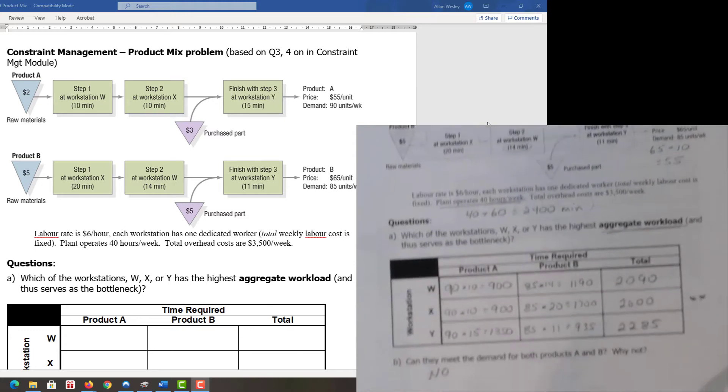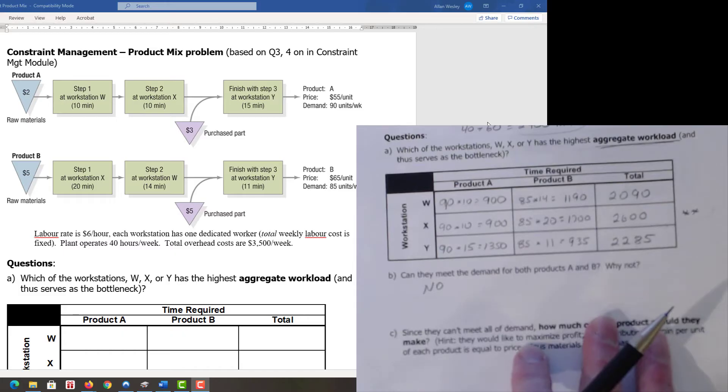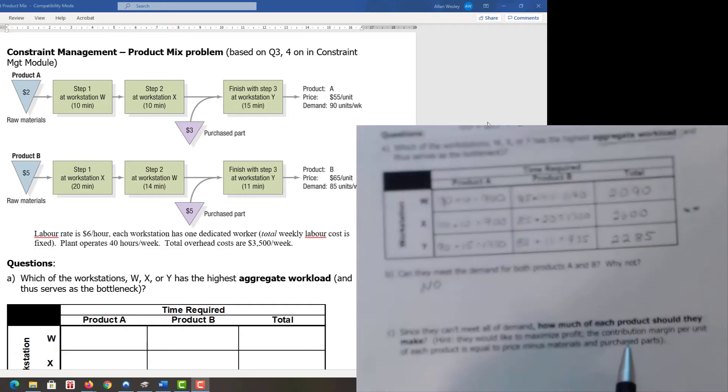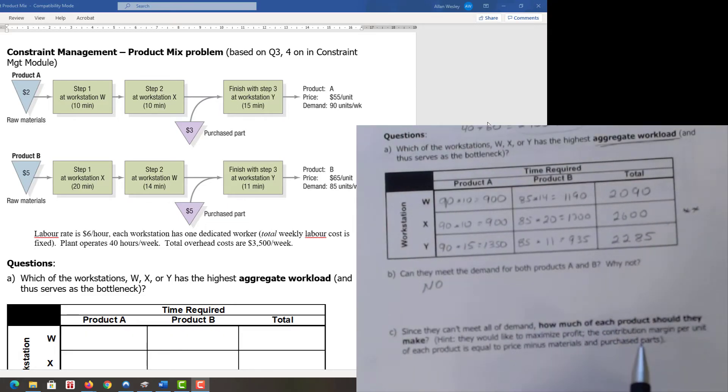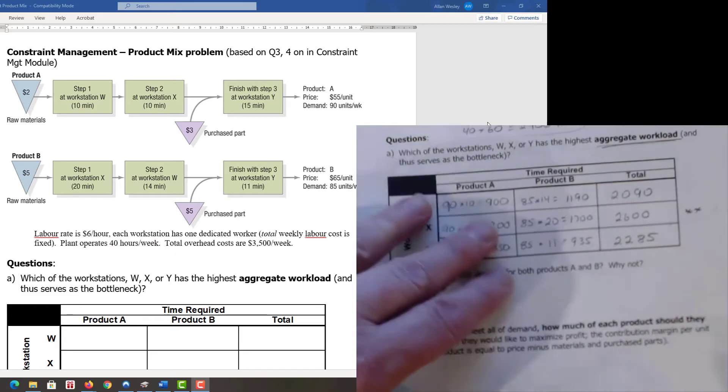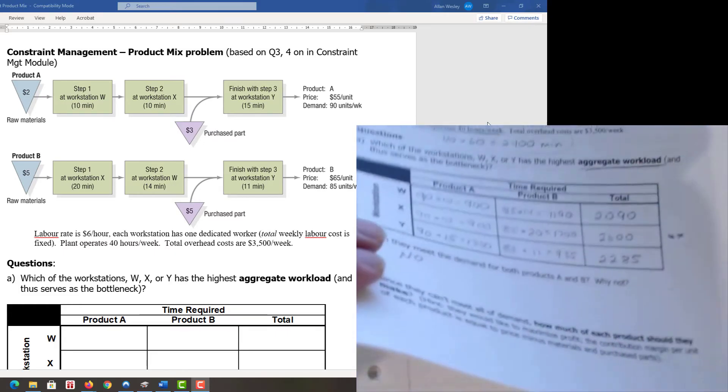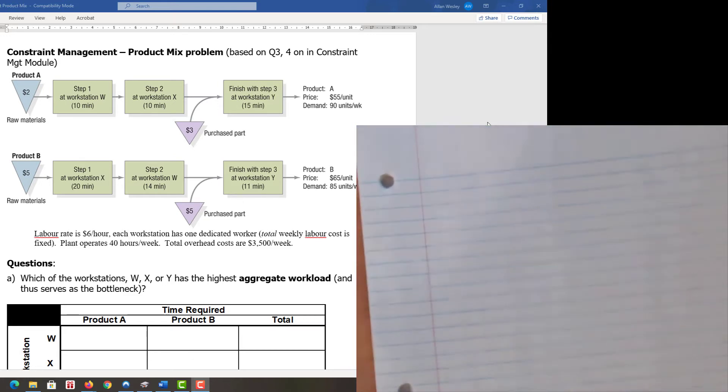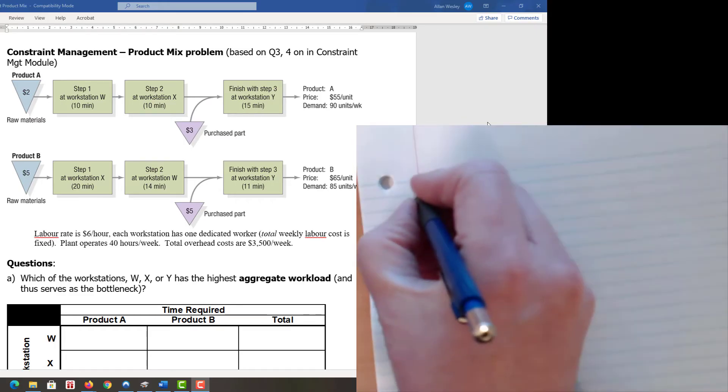Now we get into the fun stuff. Since they can't make all of the demand, how much of each product should they make if they would like to maximize profit? The contribution margin per unit equals the price minus materials and purchase cost. Now we need to do a little bit of math.